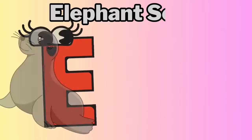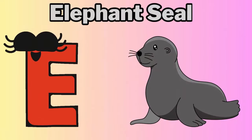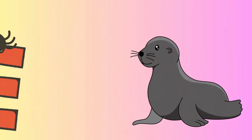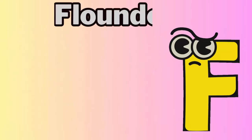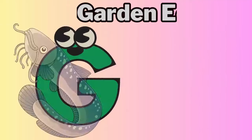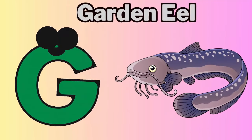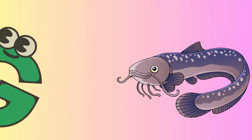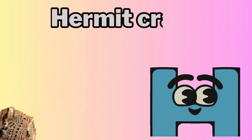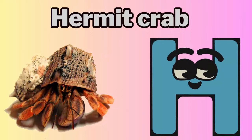E. E. for elephant seal. F. F. for flounder. G. G. for garden eel. H. H. for hermit crab.